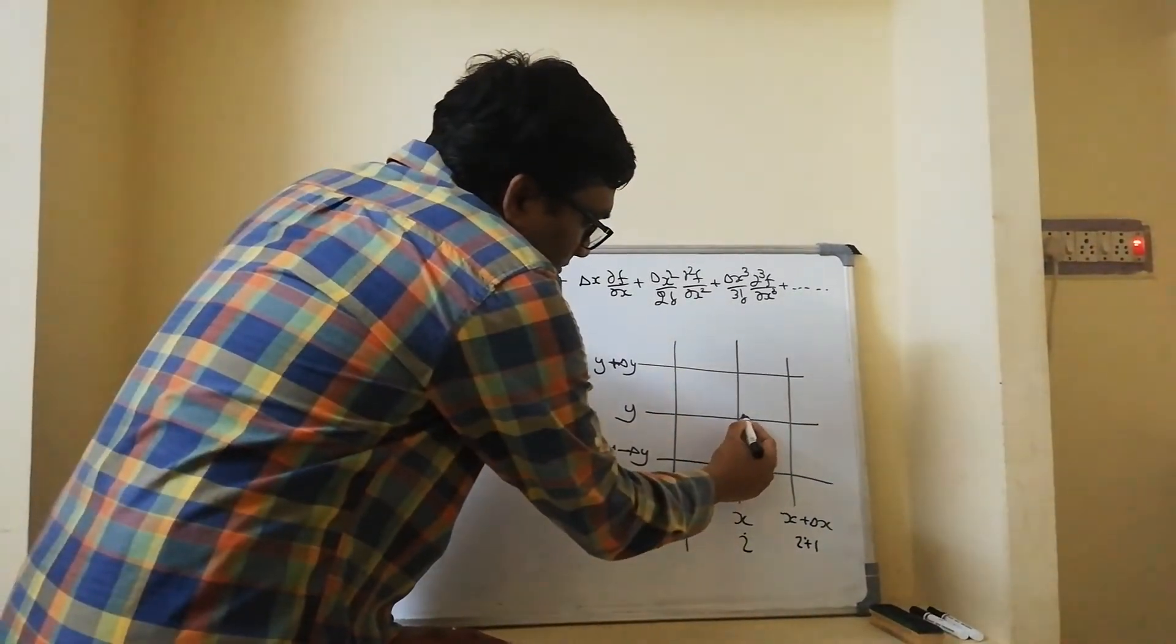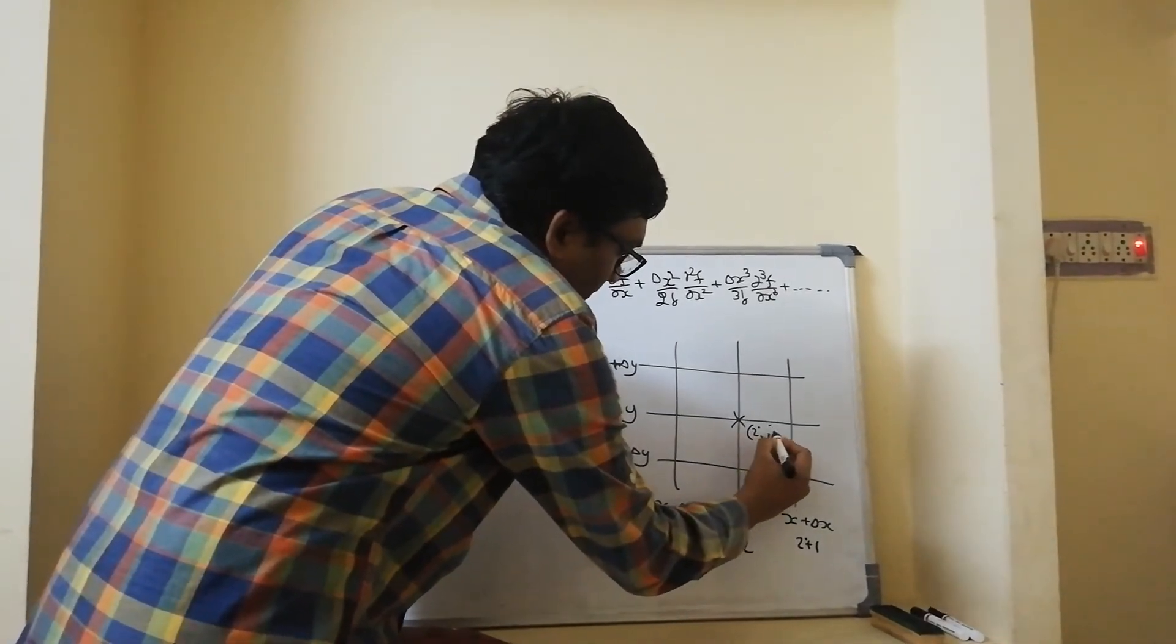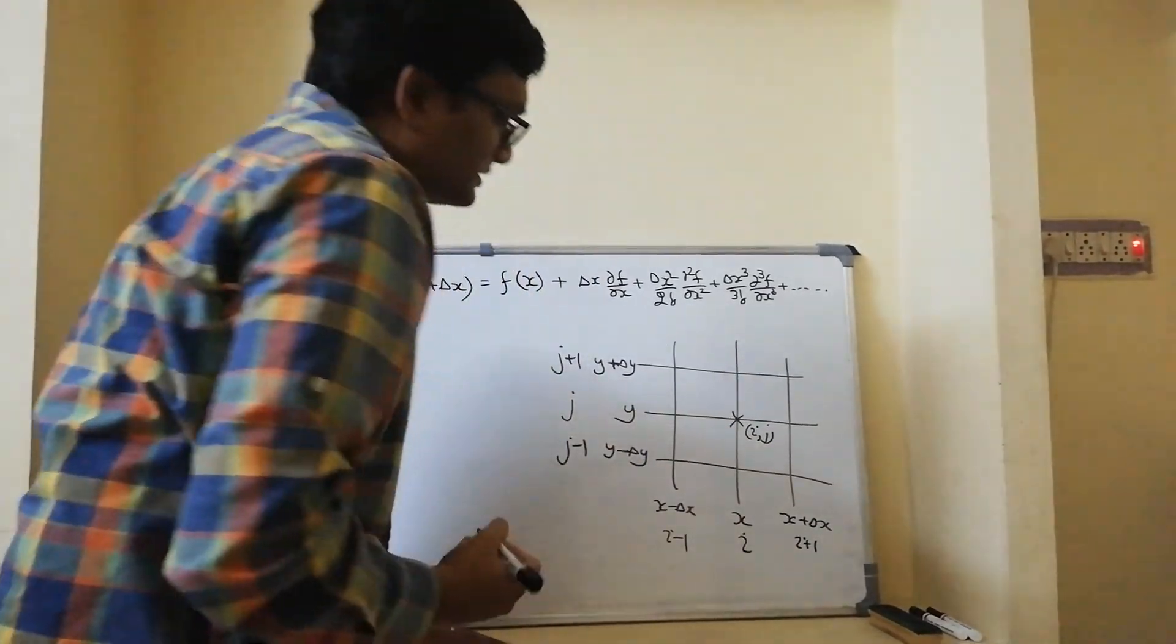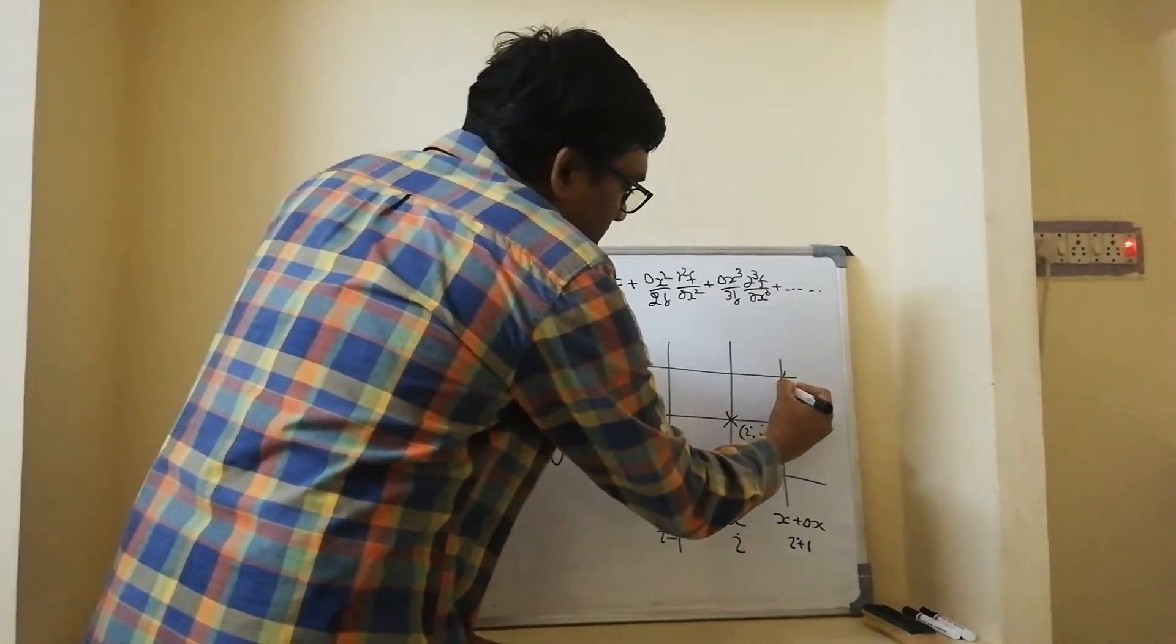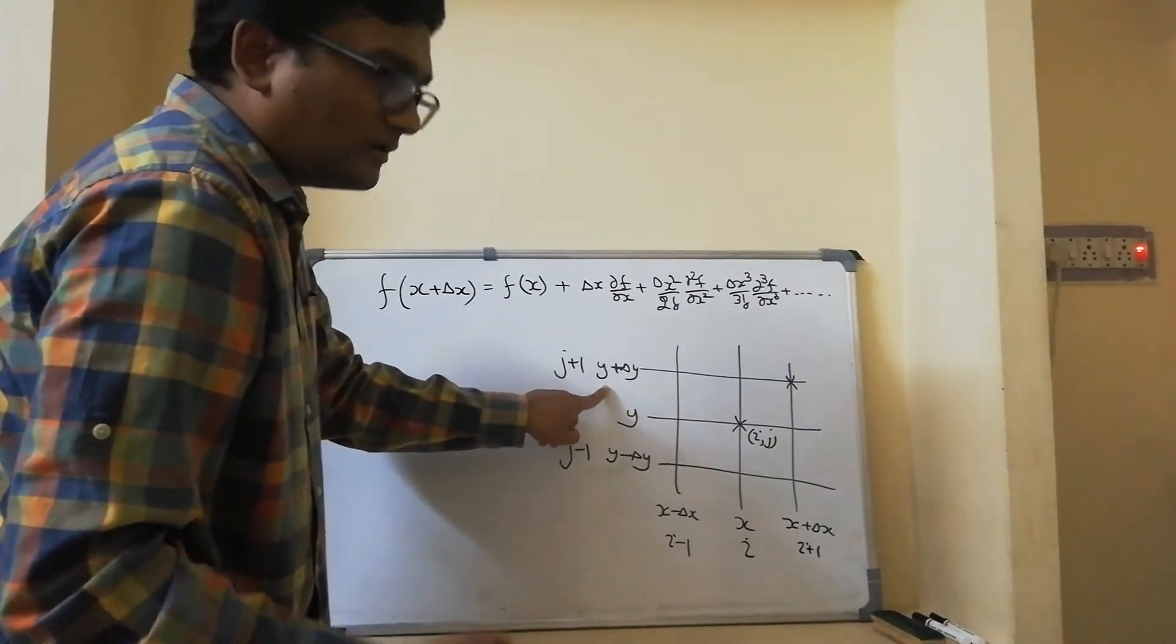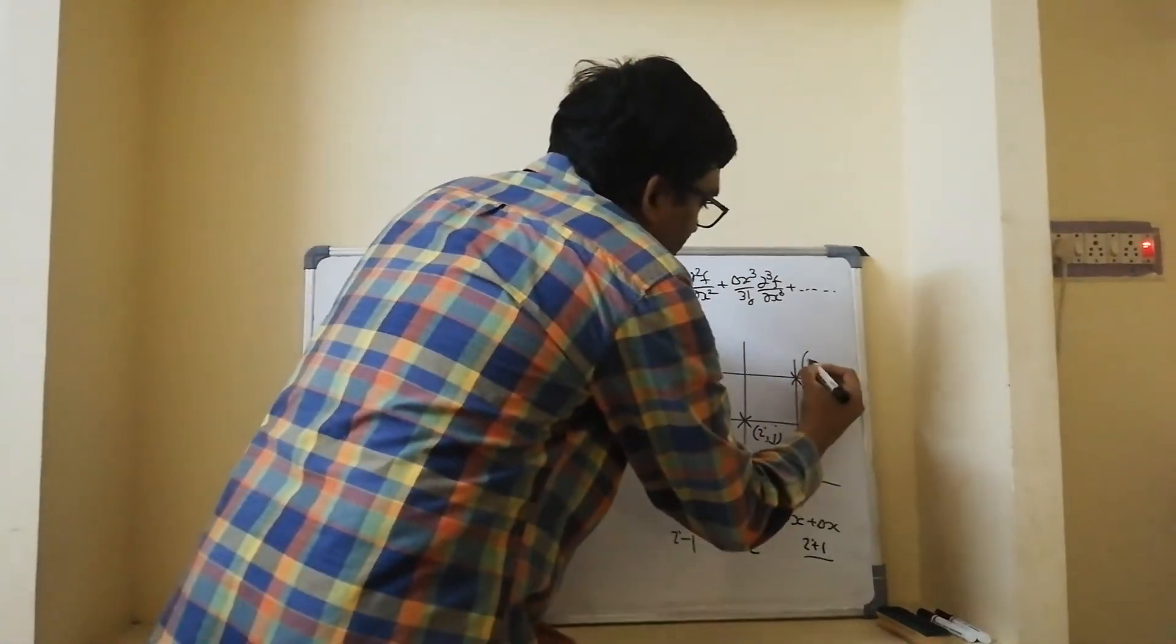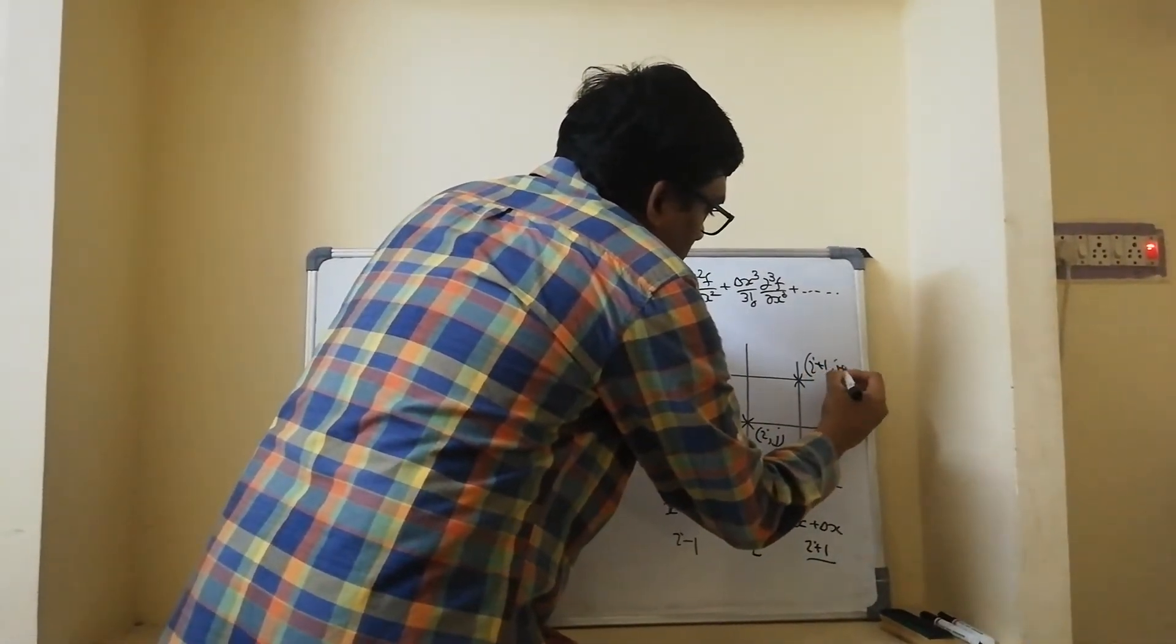This would be x plus delta x, y plus delta y or in the index notation, i plus 1 comma j plus 1.